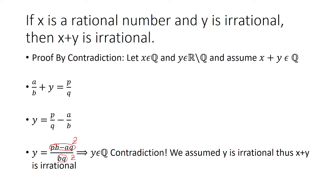That means y is rational, which is a contradiction, because we assumed that y was irrational. We said y is irrational, but we got here that y is rational — both of these can't be true. That's where the contradiction happens, and so x plus y must be irrational.